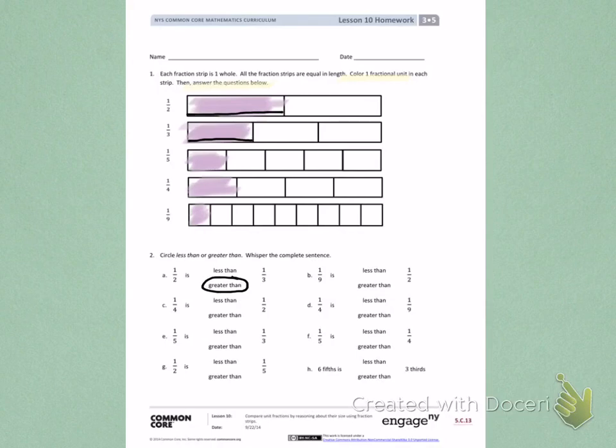Letter B. 1 ninth is less than or greater than 1 half. Again, here is 1 half. And down here is 1 ninth. 1 ninth is much smaller than 1 half. So I would say 1 ninth is less than 1 half.